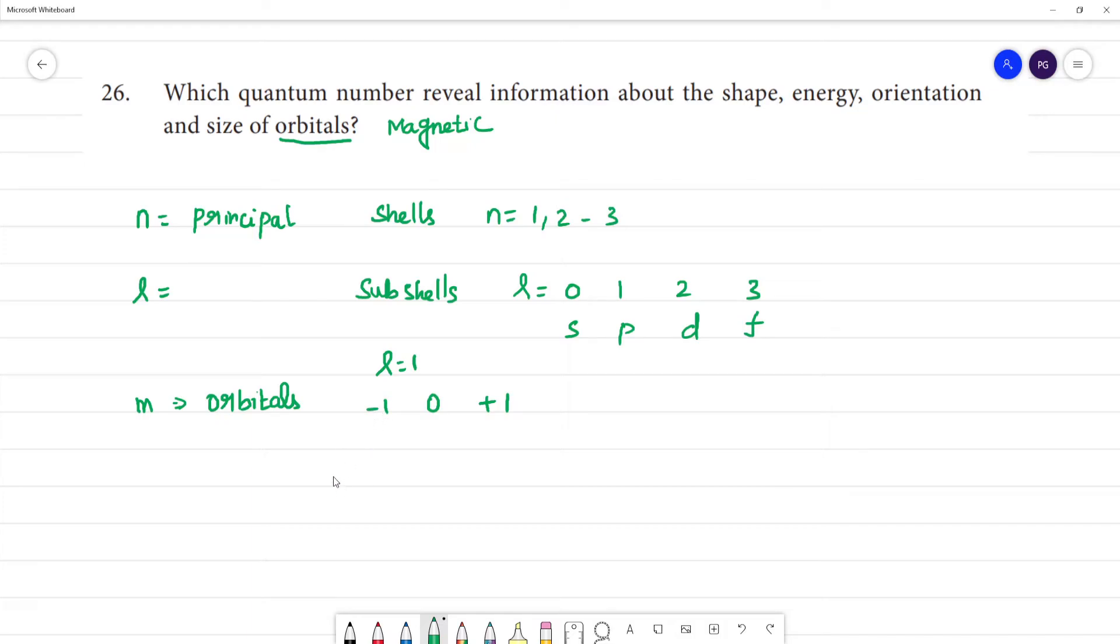This minus 1 means it's in x and y axis direction, that's px, py, and pz. So this gives information about shape.